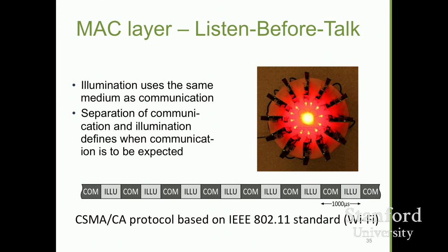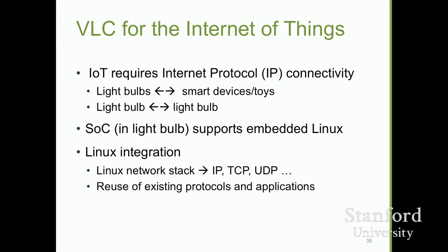Now we have a PHY layer and a MAC layer, but for VLC for the Internet of Things we need more. Most people are happy if they get IP connectivity. The system-on-a-chip in these light bulbs runs embedded Linux, giving us all the nice protocols already developed by others. This allows communication from a light bulb to a smart device or between light bulbs, and we got it basically for free.